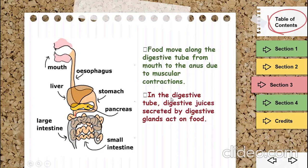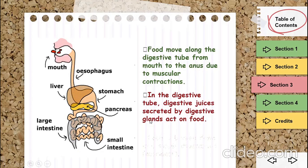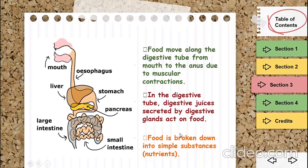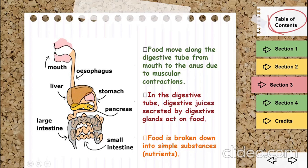The digestive juices secreted by the digestive glands act on the food. These juices are mixed with the food to make it easier for digestion. The food is broken down into simple substances, which are nutrients like proteins, carbohydrates, and fats, so the animal's body can benefit from the food.